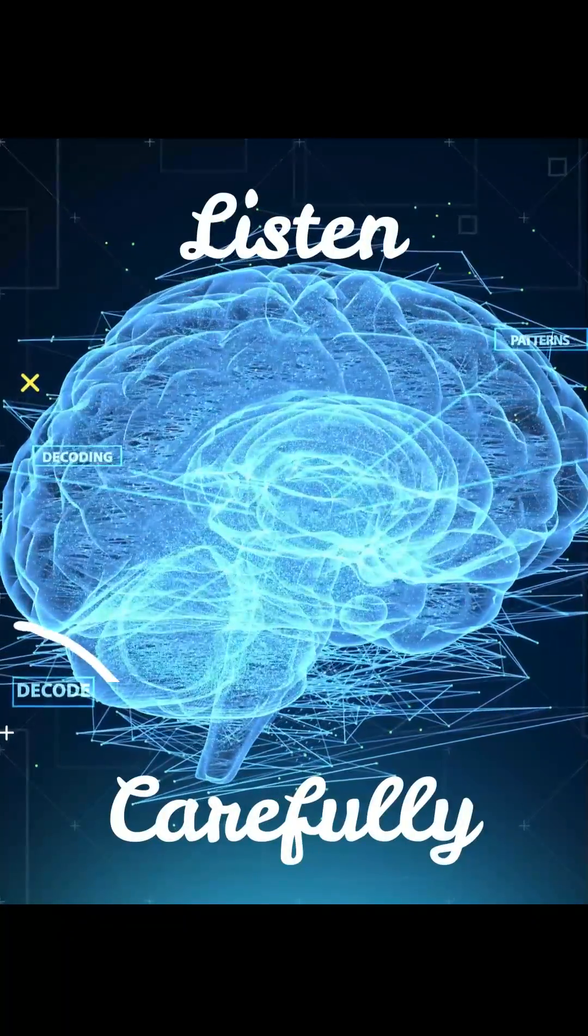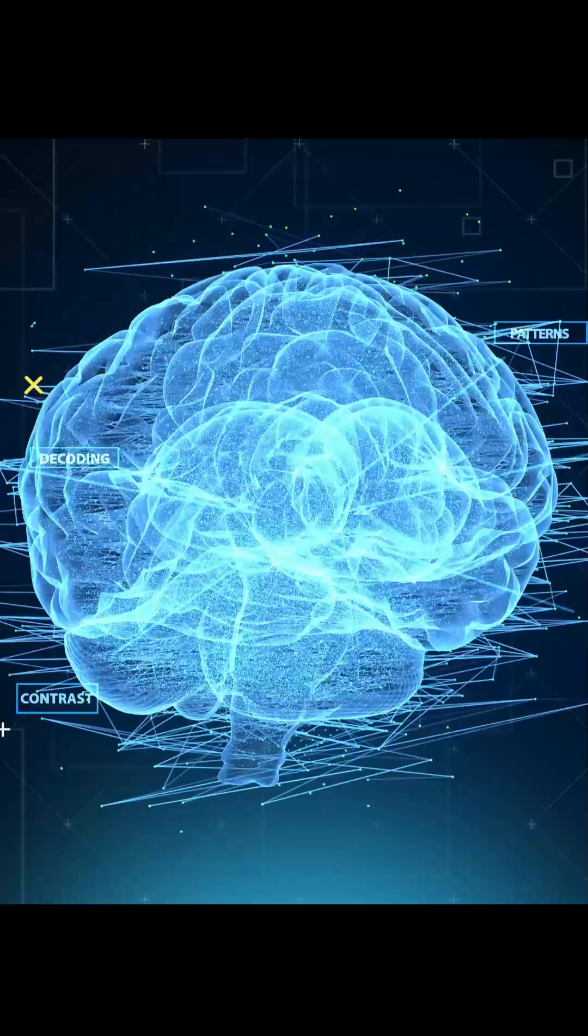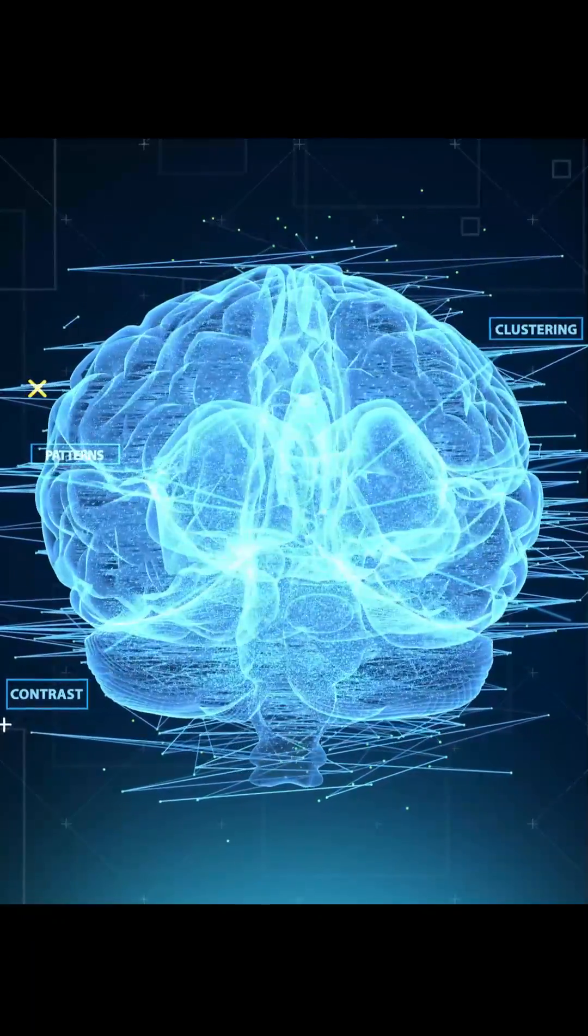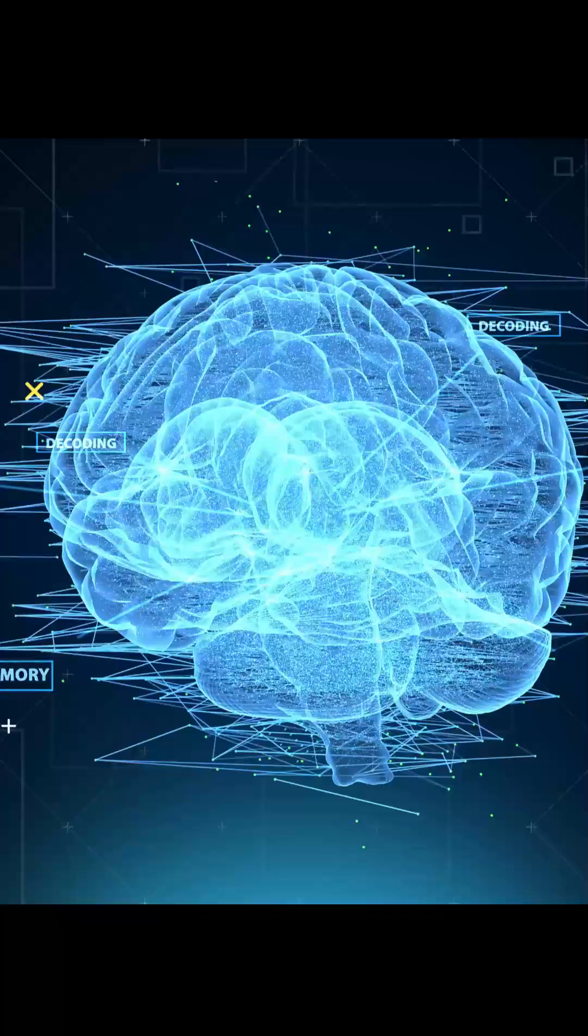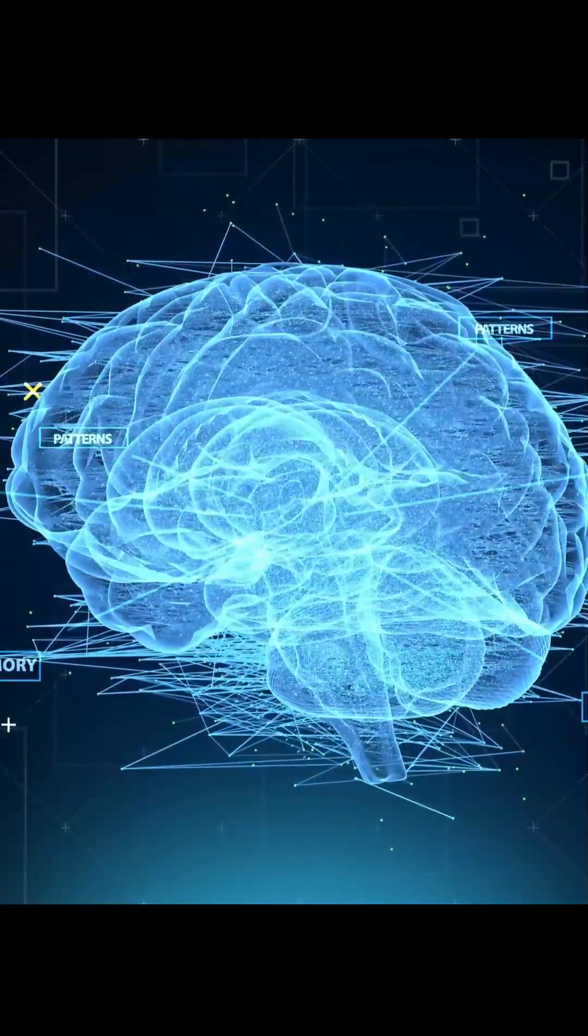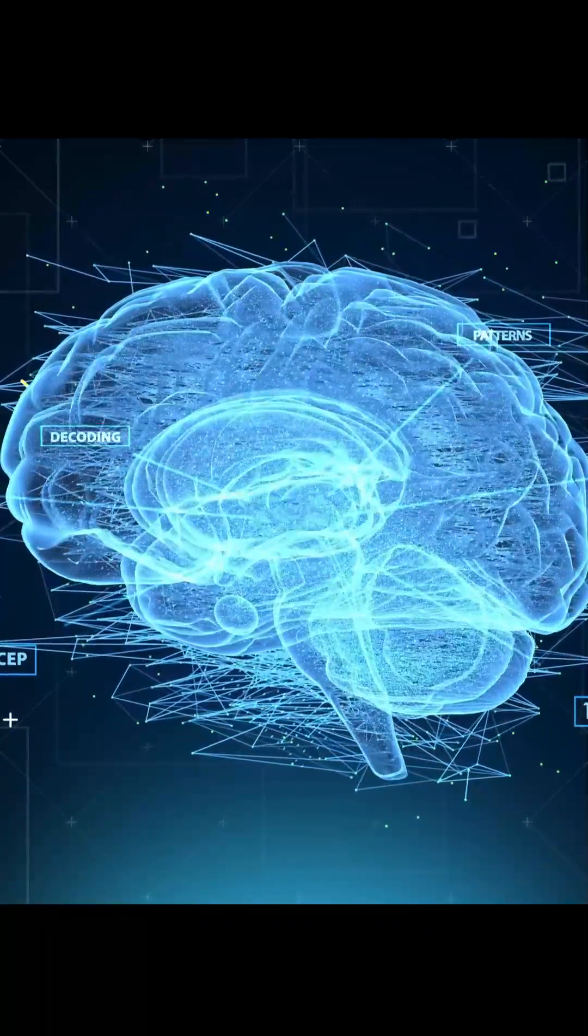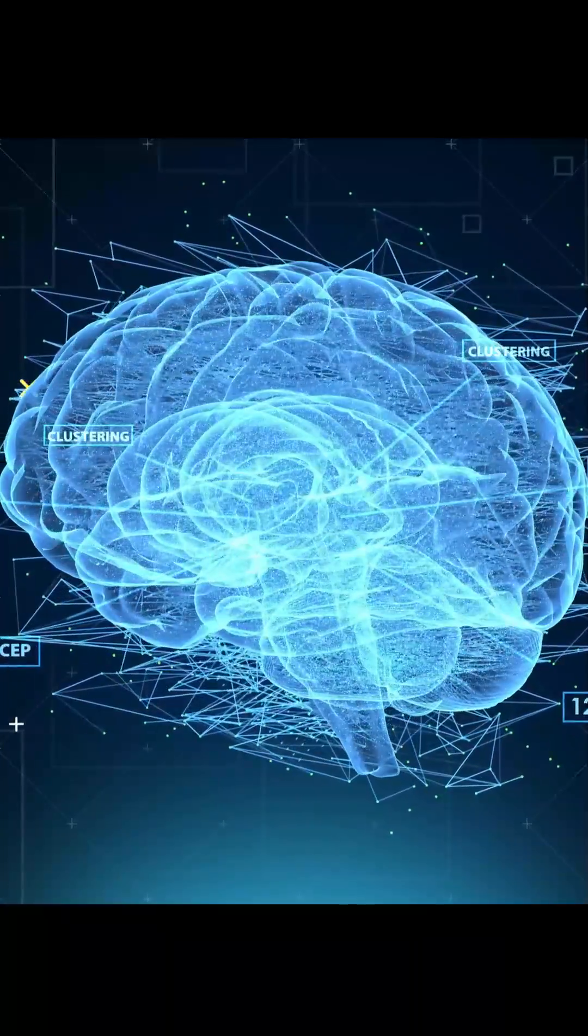The brain is divided into several parts, each of which is responsible for different functions. One of the most important parts of the brain is the prefrontal cortex, which is located in the front of the brain, just behind the forehead.